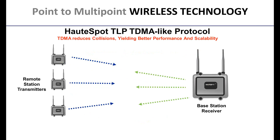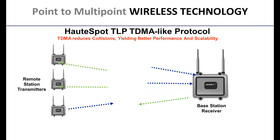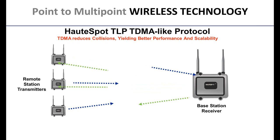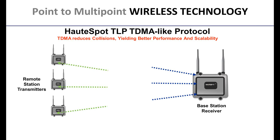Moving to point-to-point, point-to-multipoint, or repeated architectures enables our TDMA-like protocol for wireless communications. This is a proprietary Hotspot protocol that allows the base station to coordinate with remote stations, telling them when and how much to transmit. This greatly reduces wireless collisions and provides a more deterministic path for data, reducing latency and allowing transmission of multi-megapixel cameras — 1, 3, 5, 10, 20, even 40 megapixel — in these topologies.